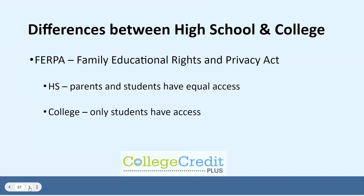There are some important differences in law that will impact students in the CCP program. The Family Educational Rights and Privacy Act, known as FERPA, is different between the K-12 and higher education systems. For the K-12 system, parents and students have equal rights to the student's educational records, meaning a parent can call a teacher and be given information about the student's performance. That changes at the college level, however. At the college level, only the student has access to the educational record, regardless of their age. It will be up to the student to reach out to the instructor to ask questions about homework or grades.